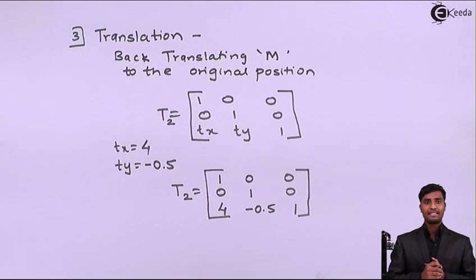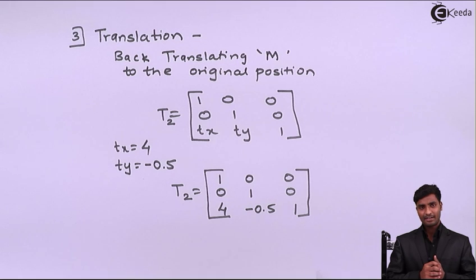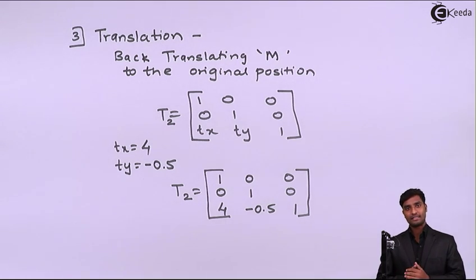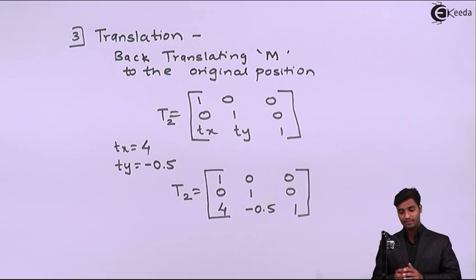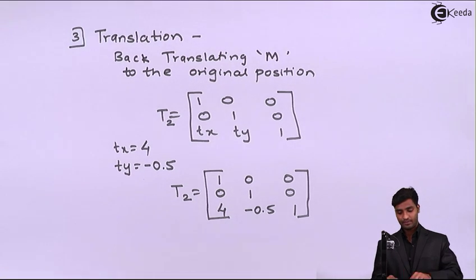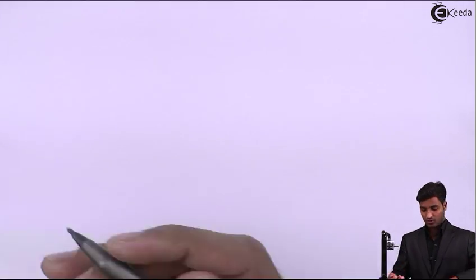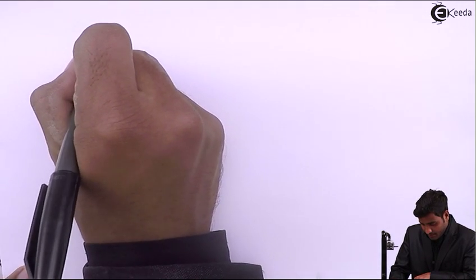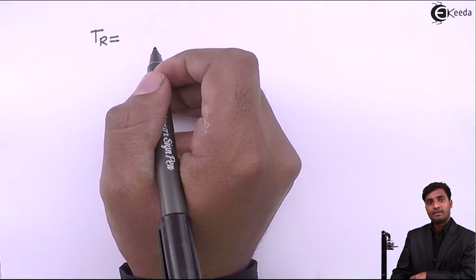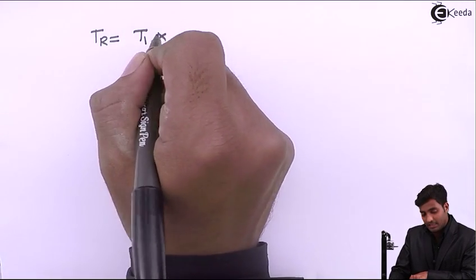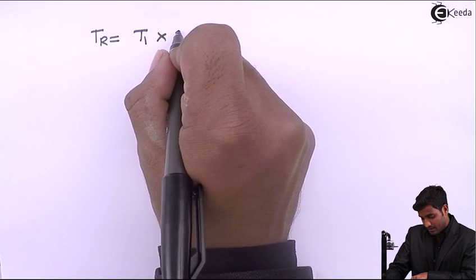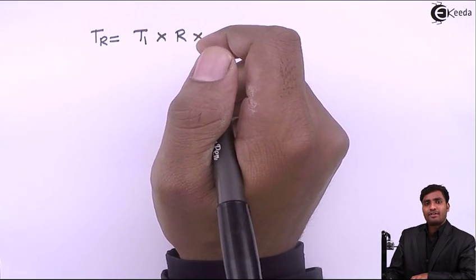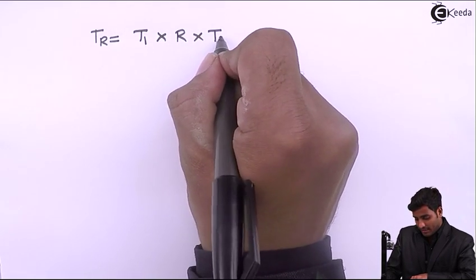Now we will find the total resultant transformation TR. For that we multiply all matrices in the order we solved them: TR = T1 × R × T2. First translation T1, then rotation R, then back translation T2.